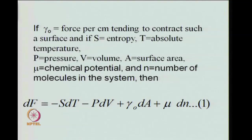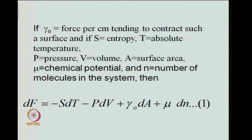Here γ₀ is the force per centimeter tending to contract a liquid surface, or even a solid surface in general. S is entropy, T the absolute temperature, capital P is pressure, capital V is volume, A is the surface area, μ is chemical potential, and N represents the number of molecules in the system.